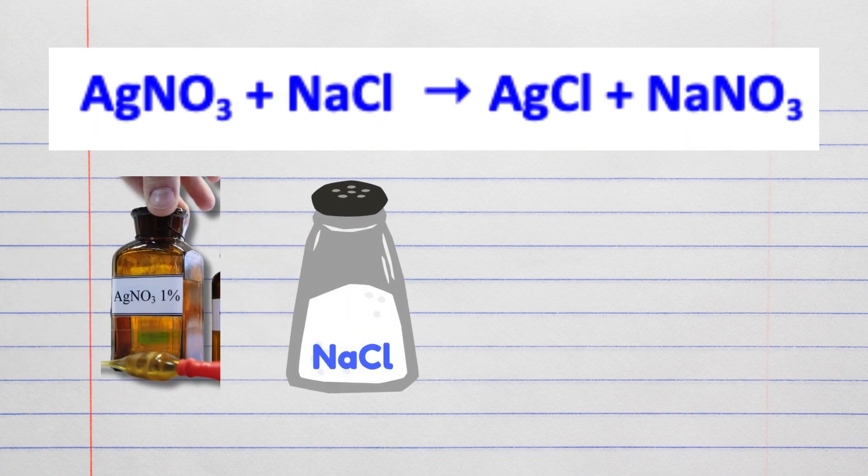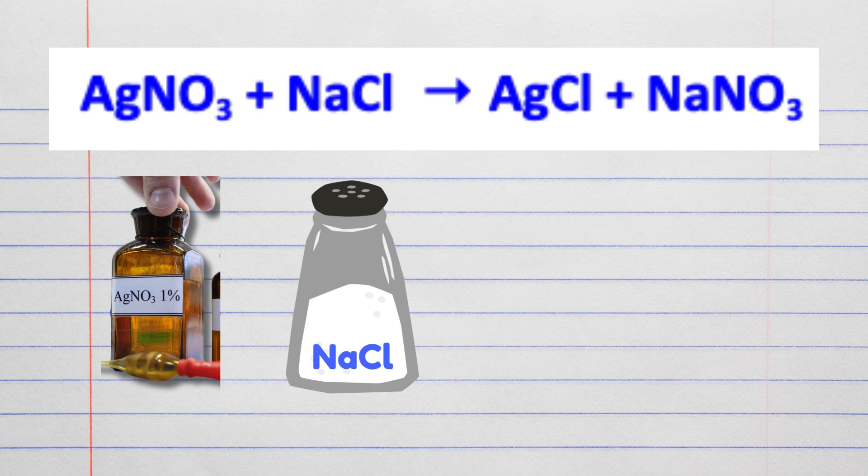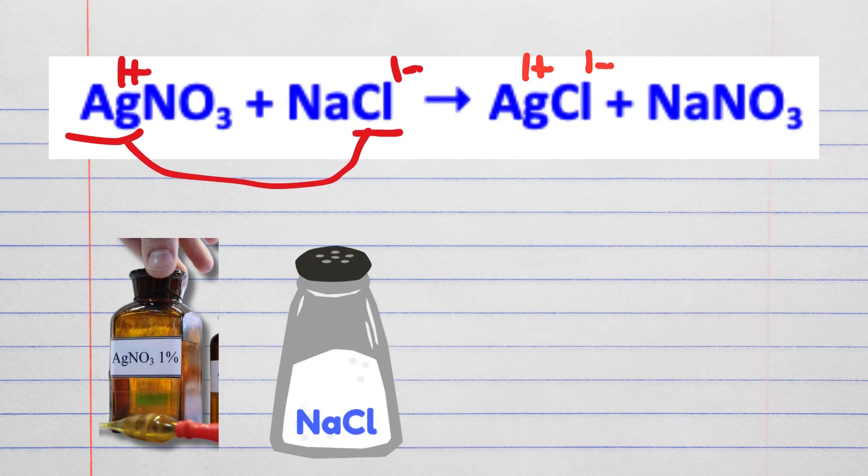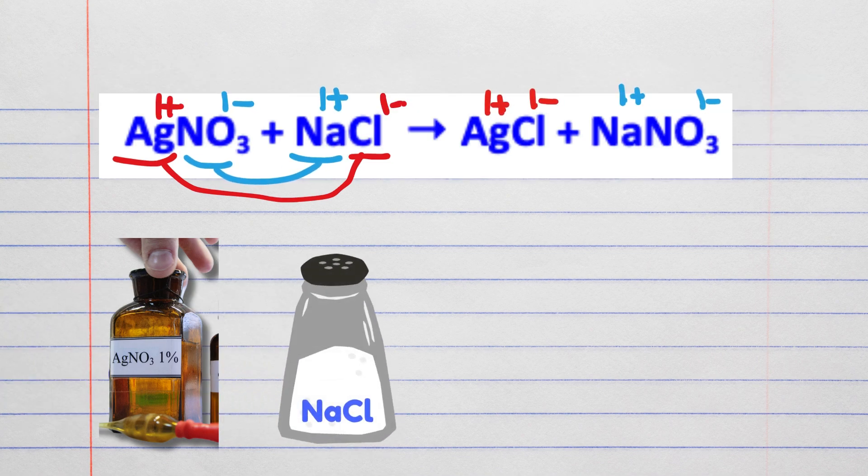The reaction between silver nitrate and sodium chloride to form silver chloride and sodium nitrate. The silver 1 plus ion from the silver nitrate combines with the chloride 1 minus ion from the sodium chloride to form silver chloride. While the Na1 plus ion from the sodium chloride combines with the nitrate 1 minus ion from the silver nitrate to form sodium nitrate.